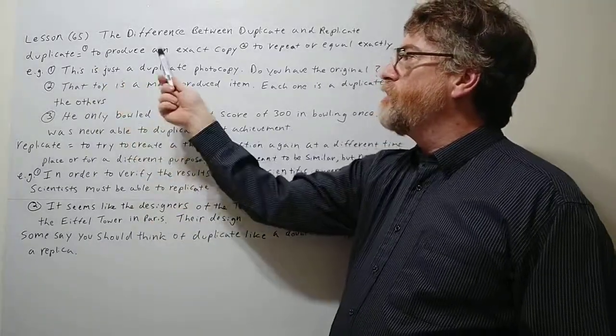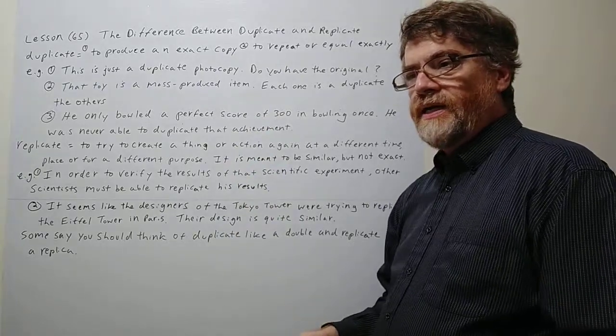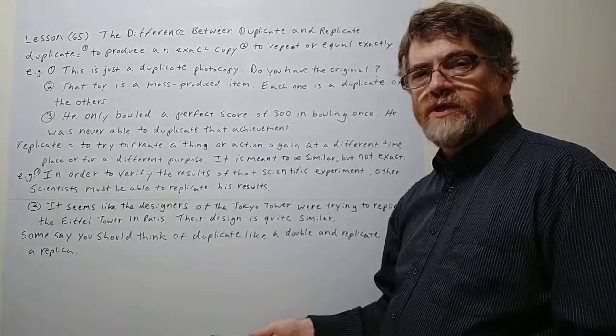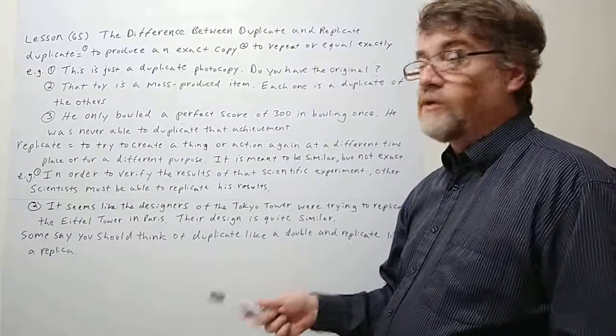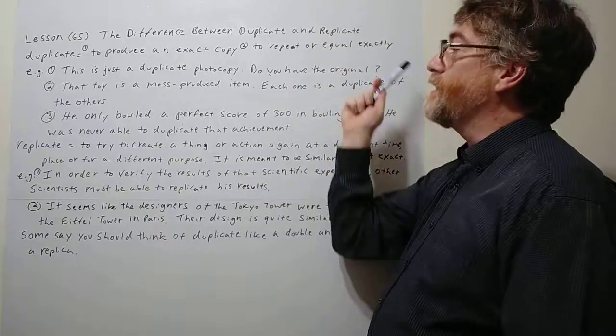To duplicate means to produce an exact copy. That's one of the things about duplicate - it's always pretty much implied that it's almost an exact double. It's an exact duplicate of something, or to repeat or equal exactly.